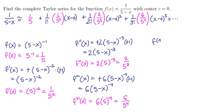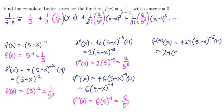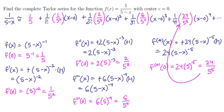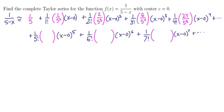Taking the fourth derivative, just hunting for patterns: we get negative 24 times (5 minus x) to the minus 5th, times minus 1 from the inside — signs change, giving 24 times (5 minus x) to the minus 5. Plugging in x equals 0, the fourth derivative at the center is 24 times 5 to the minus 5, or 24 over 5 to the 5th. That gives us the next term in our series.